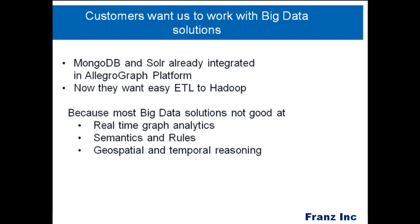Big data is good at many different things. If you have lots of data and want to do relatively simple analytics or machine learning, the new big data solutions are fantastic. But if you want real-time graph analytics with answers within milliseconds, big data is still not good enough. You can do graph analytics on Hadoop, but you'll get answers back in seconds or minutes, not milliseconds. If you want to work with semantics — the meaning of data — or apply a rule base to big data sets, it's extremely hard to translate rules into MapReduce expressions. Triple stores are much better for semantics and rules.